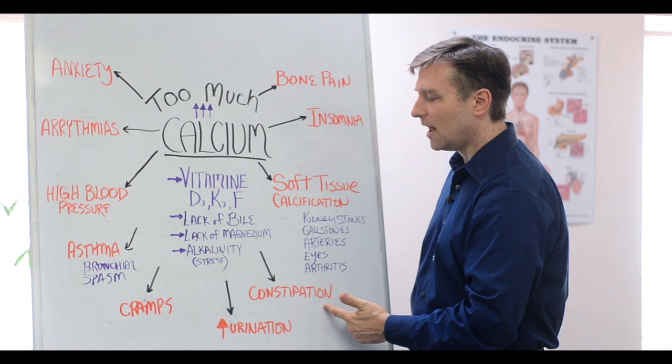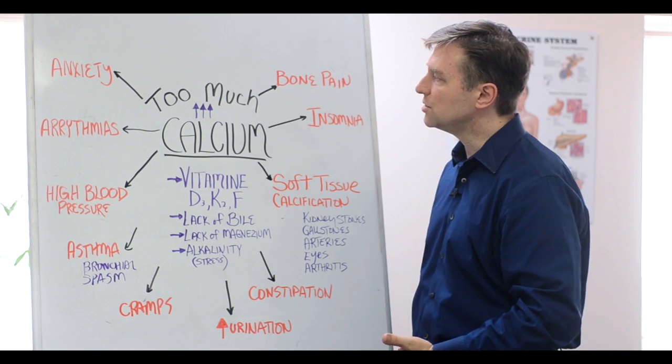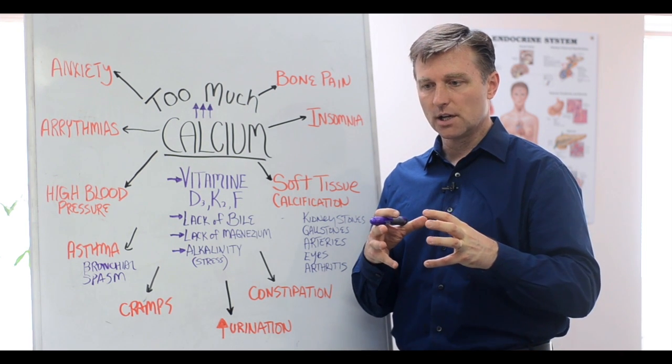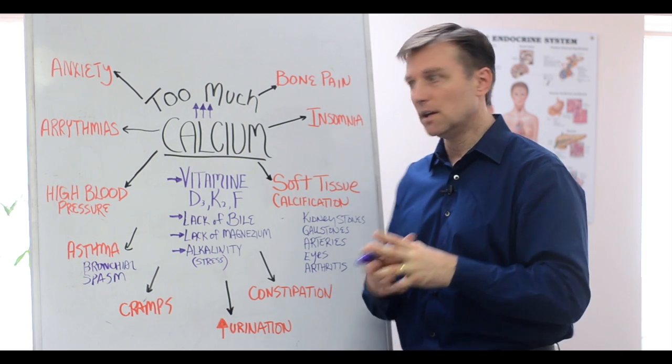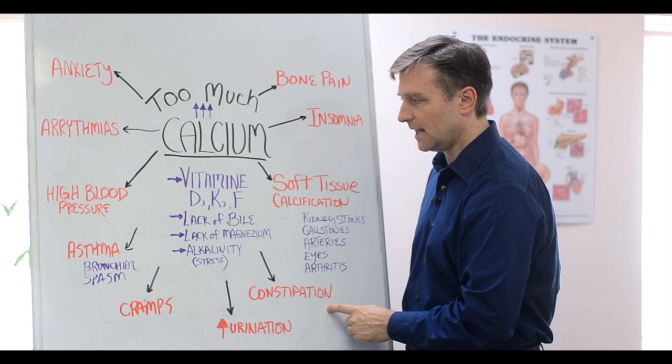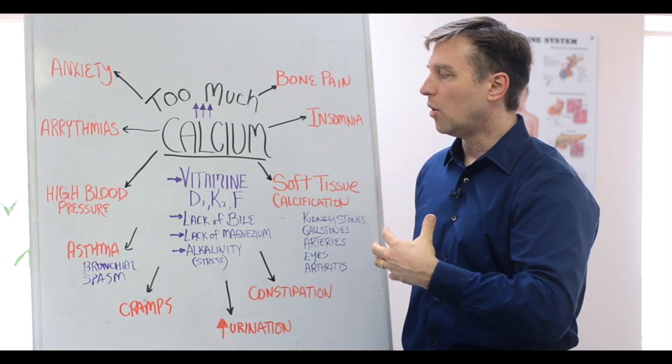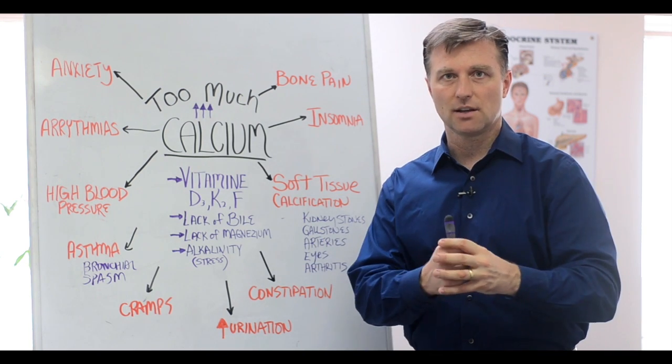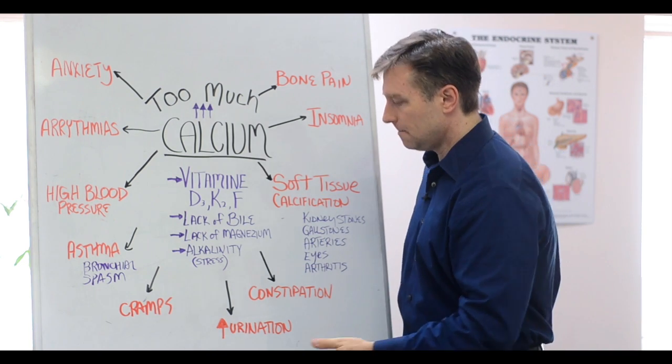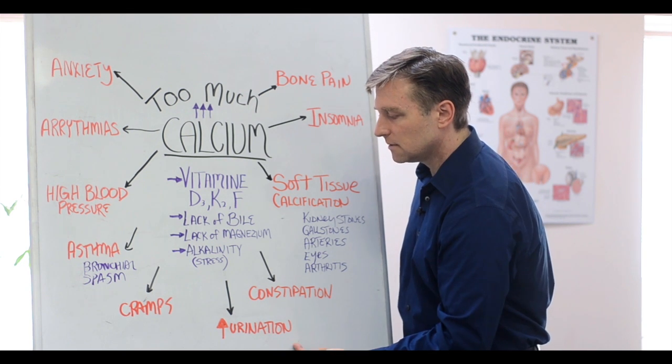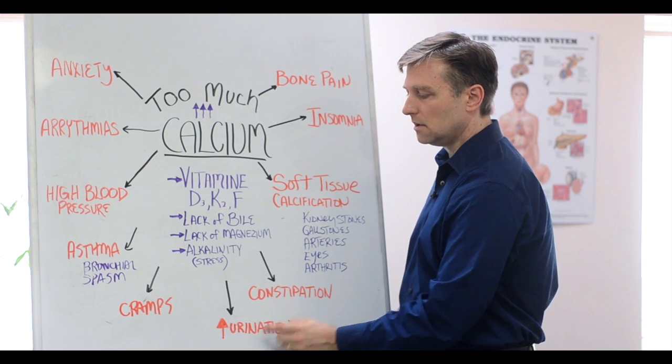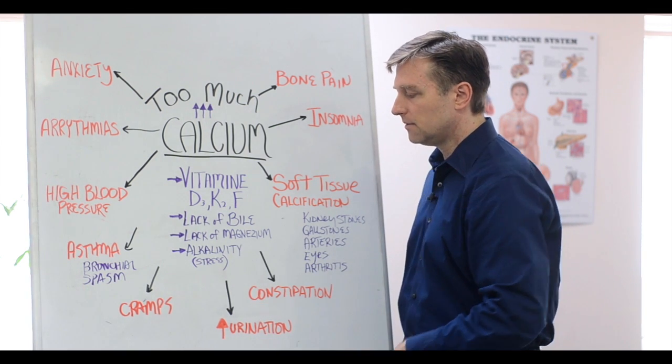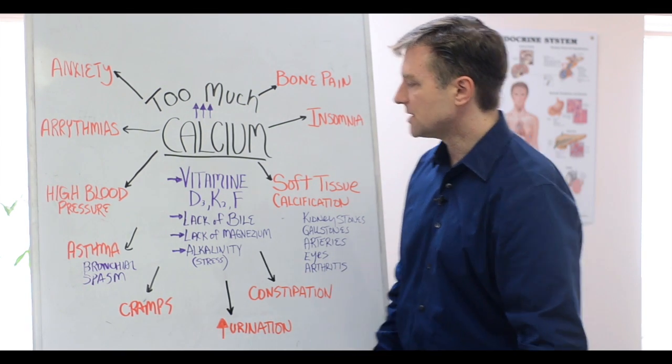Then we get constipation. Constipation is one symptom of too much calcium. Why? Because calcium causes a contraction of the smooth muscle. That's why it causes bronchial spasm too of the lung or asthma symptoms because there's too much contraction and not enough relaxation. Excessive urination. That's one symptom as well. This could come from diabetes and other things, but too much calcium is one of the symptoms of excessive urination.